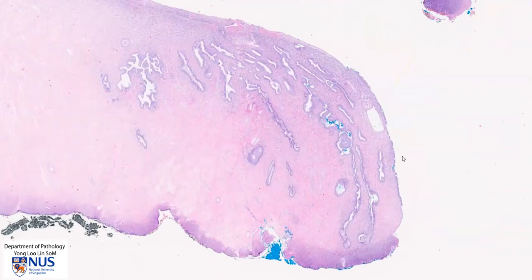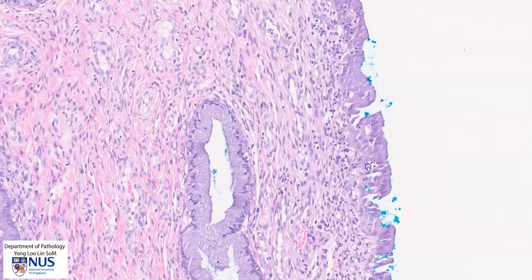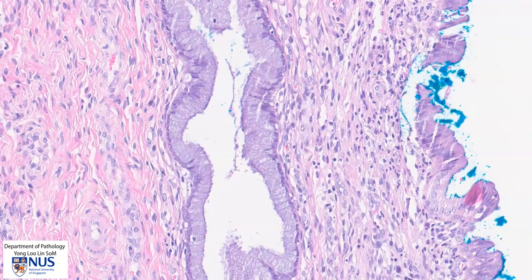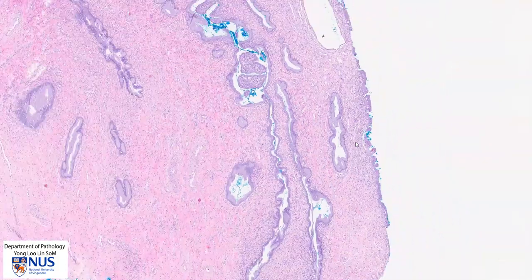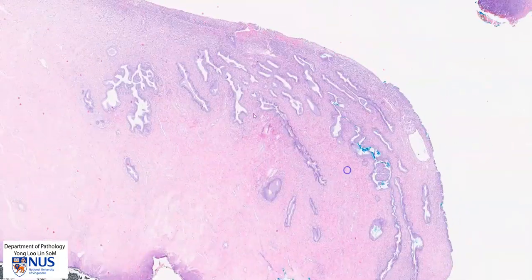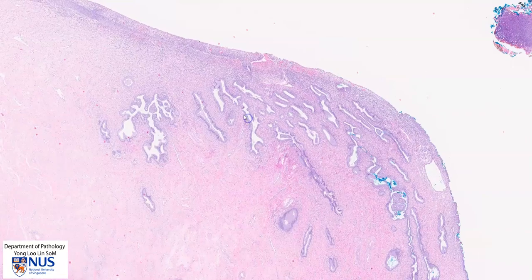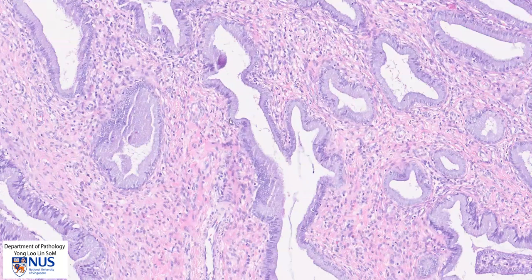Let's take a very quick look at the endocervix. We can see that it is lined by these columnar cells with basal nuclei, and sometimes the endocervical cells dip into the underlying stroma. We can see very nicely the basal nuclei and the tall column of grayish-bluish cytoplasm because it is rich in mucin. The presence of these endocervical glands dipping into the stroma is a normal finding and does not represent adenocarcinoma. We can see that the cells are all very bland with very uniform basally-oriented nuclei.